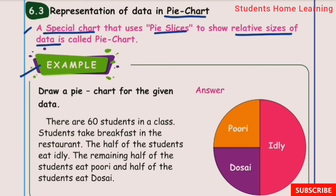For example, draw a pie chart for the given data. There are 60 students in a class. Students take breakfast at the restaurant. Half of the students eat idli. Of the remaining students, half eat poori and the other half eat dosai.